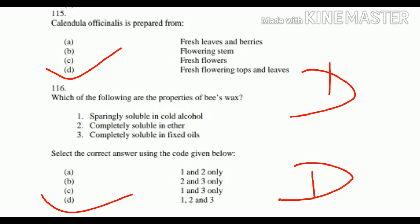Question number 115: Calendula officinalis is prepared from: A. Fresh leaves and berries, B. Flowering stem, C. Fresh flowers, D. Fresh flowering tops and leaves. This has been discussed in our pharmacy video.